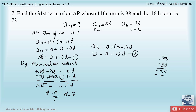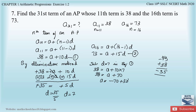Now substitute d = 7 into equation 1 to find a. 38 = a + 10 × 7, so 38 = a + 70. Transferring 70 to the left hand side: a = 38 - 70 = -32. So we have found a = -32 and d = 7.